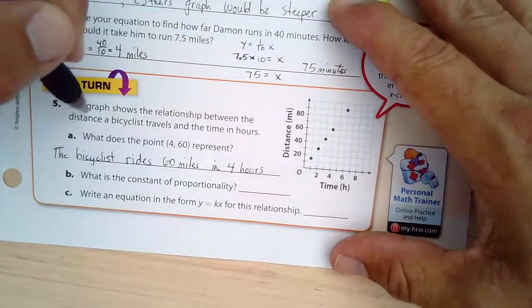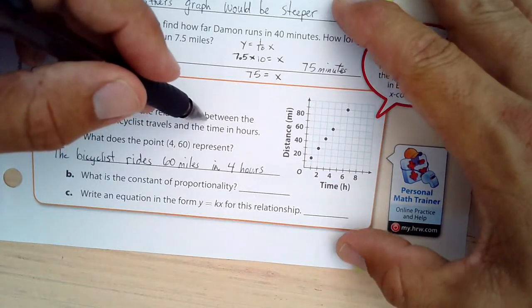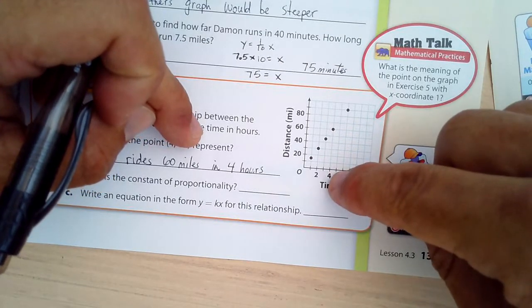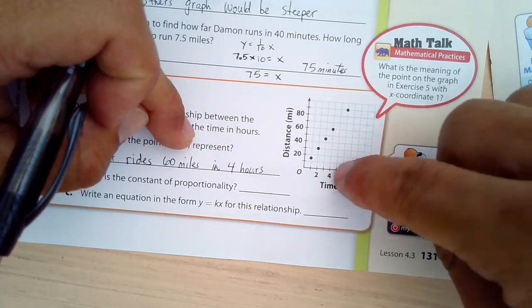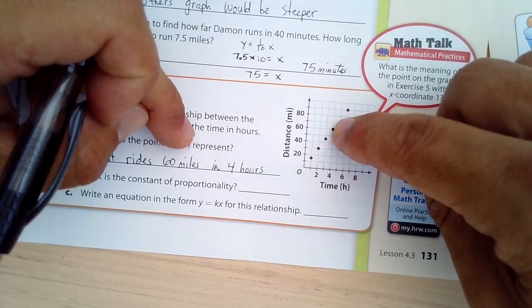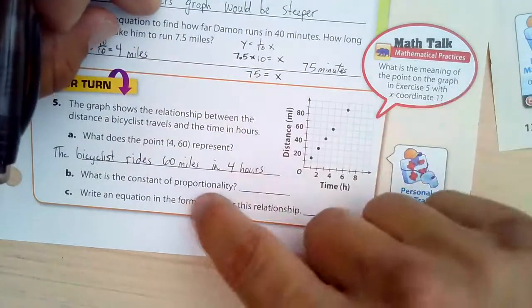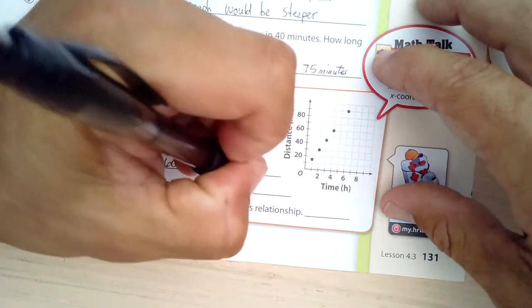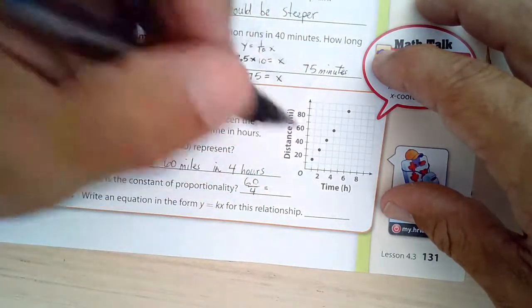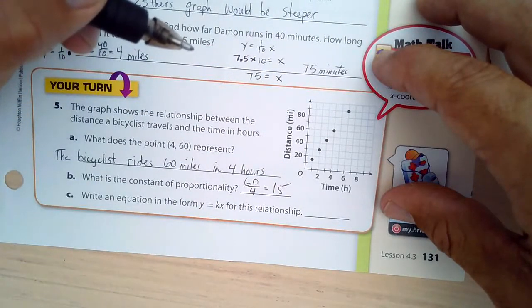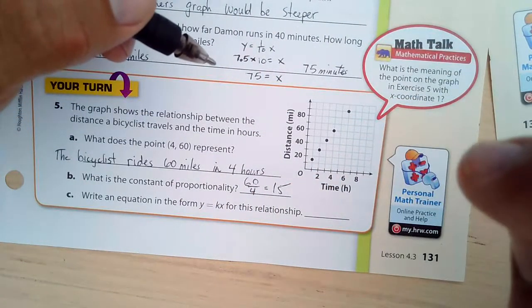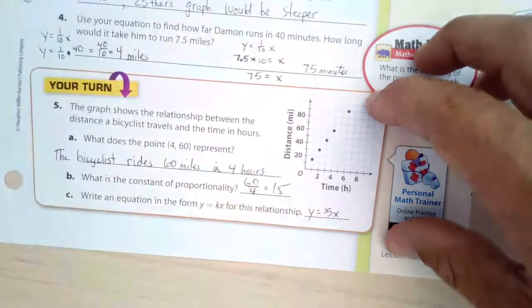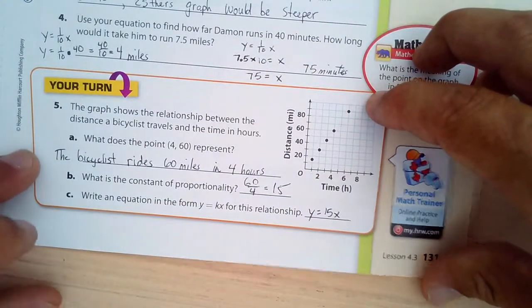The graph shows a relationship between the distance a bicyclist travels and the time in hours. What does the point 4, 60 represent? 4 hours, you can travel 60 miles. So 60 miles in 4 hours. What's the constant of proportionality? I would take 60 and 4. 60 divided by 4 is 15. So 15. The constant of proportionality is 15. And write the equation, y equals kx. So y equals 15x. And there it is. Our equation for the proportional relationship.